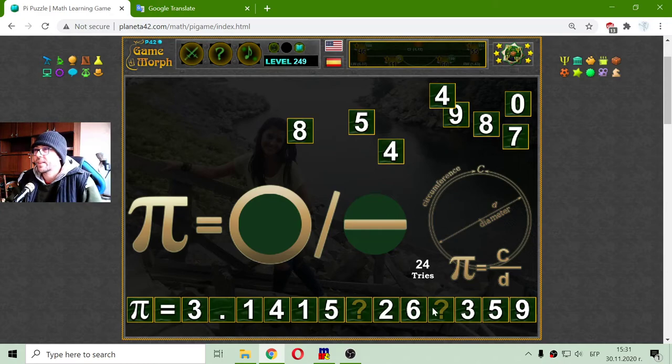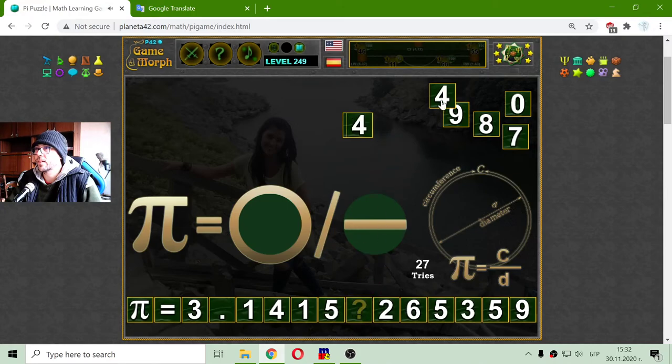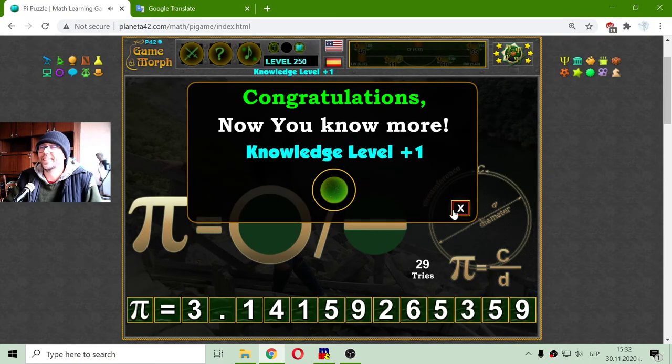A tool. Okay, another 5. 2, 6, 5, 3, 5, 9. And I just need to place one more number. It's not 5, it's not 4. Okay, that 4, that 9. There it is.